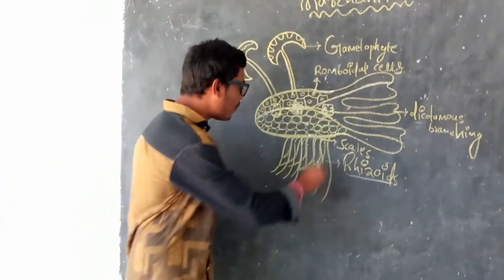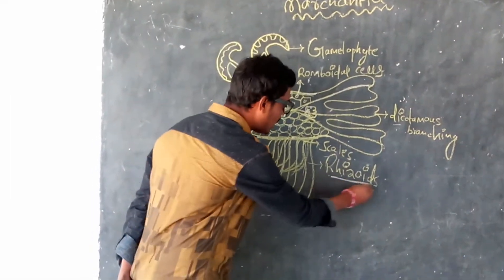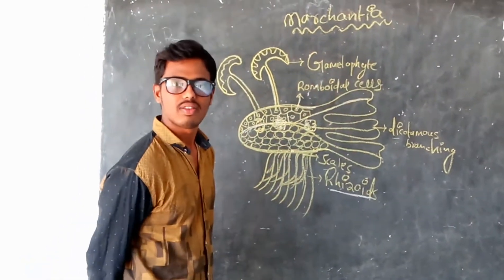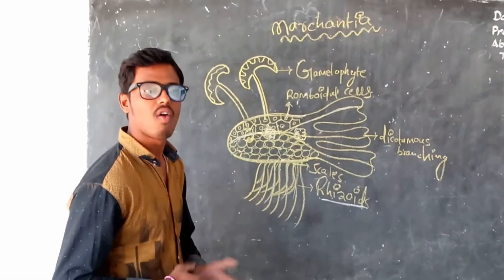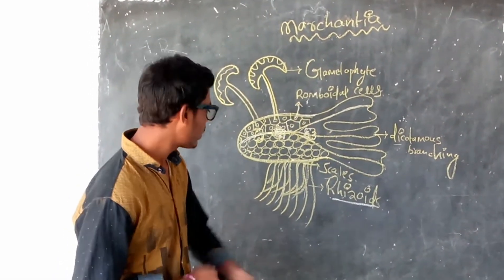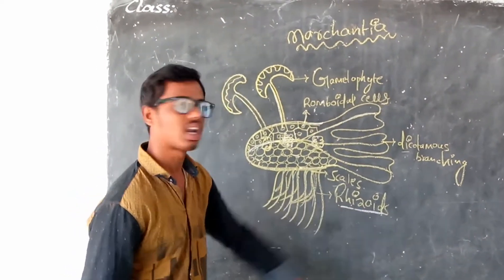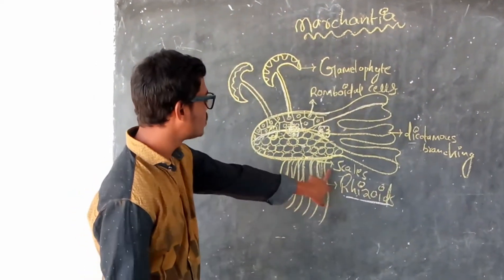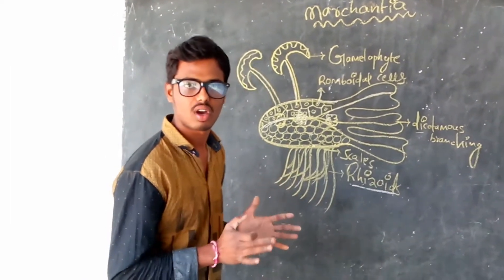Here the rhizoids are observed. Rhizoids are mainly useful in fixation and absorbing water and minerals. The scales are also observed. The scales give protection to the plant body or thallus.